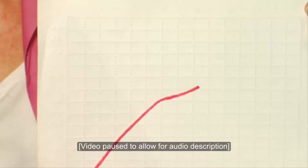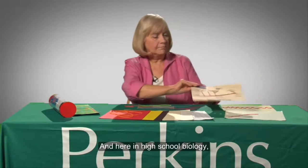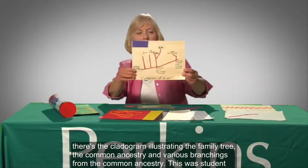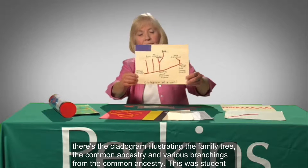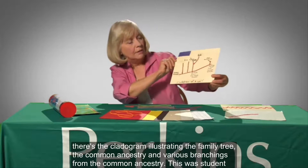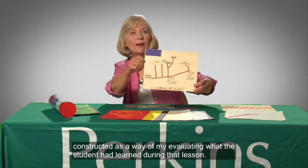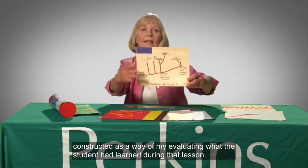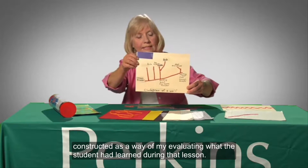She picks up a WikiStick depiction of evolutionary branching. And here in high school biology, there's the cladogram illustrating the family tree, the common ancestor and various branchings from the common ancestor. This was student constructed as a way of evaluating what the student had learned during that lesson.